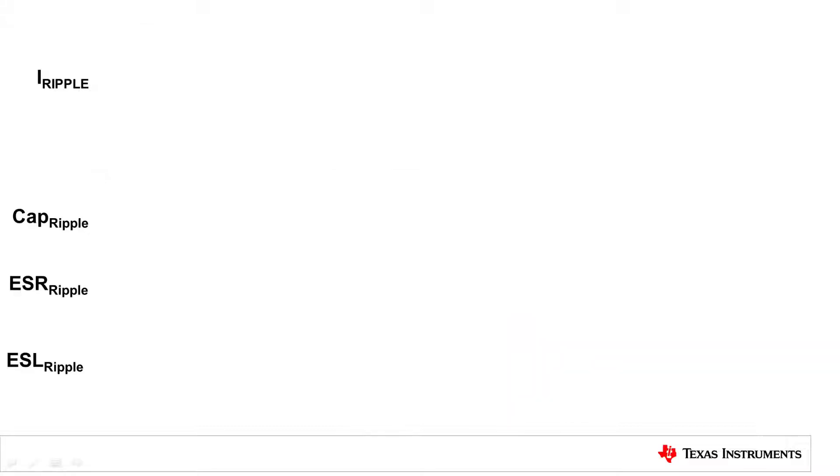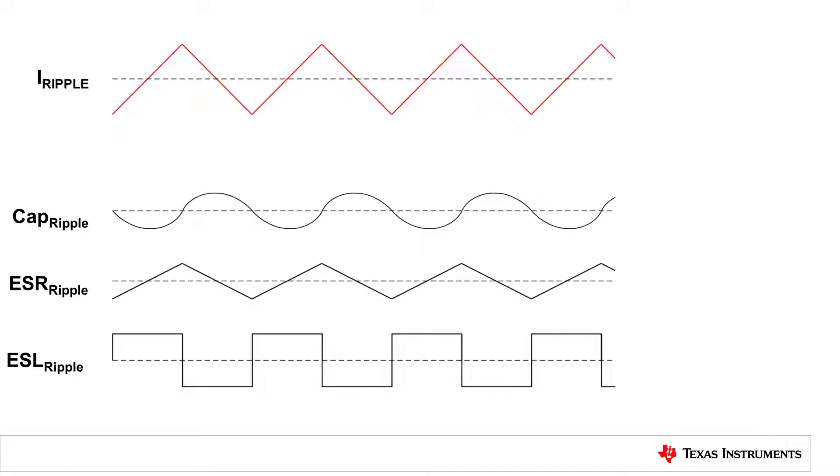Each section will contribute to ripple in a different way. Capacitance will have a very round contribution, resistance will create a voltage ripple in the shape of the current ripple, and inductance will create a square wave based on the slope of the inductor ripple current.